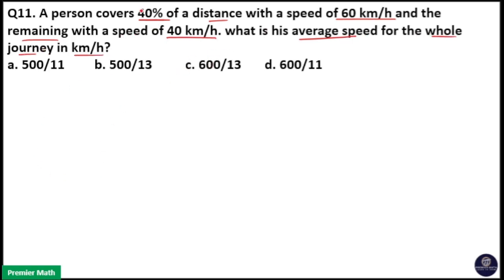Here distance is different but here distance is given in percentage term. So 40 percentage of the distance he covered with a speed of 60 km per hour and the remaining distance, that is 60 percentage of the distance, he covered with a speed of 40 km per hour.